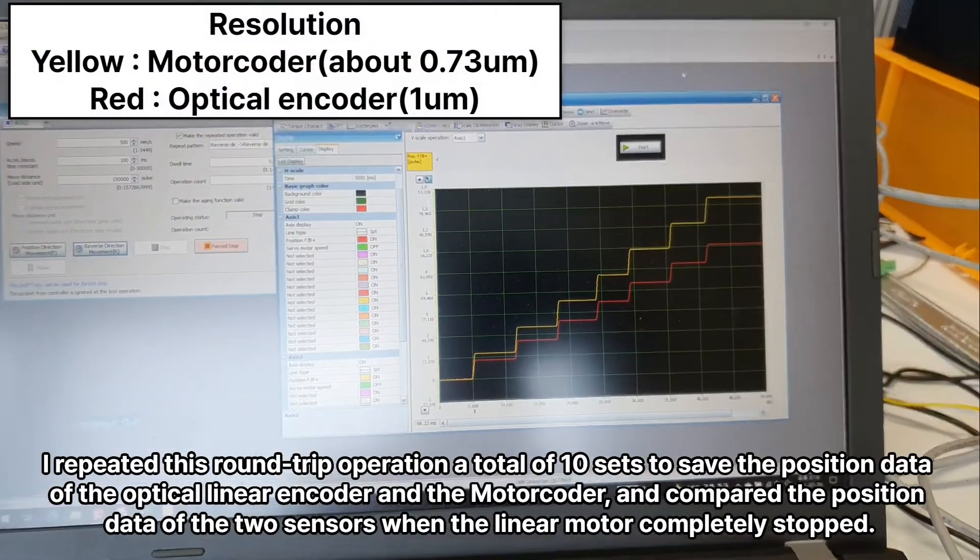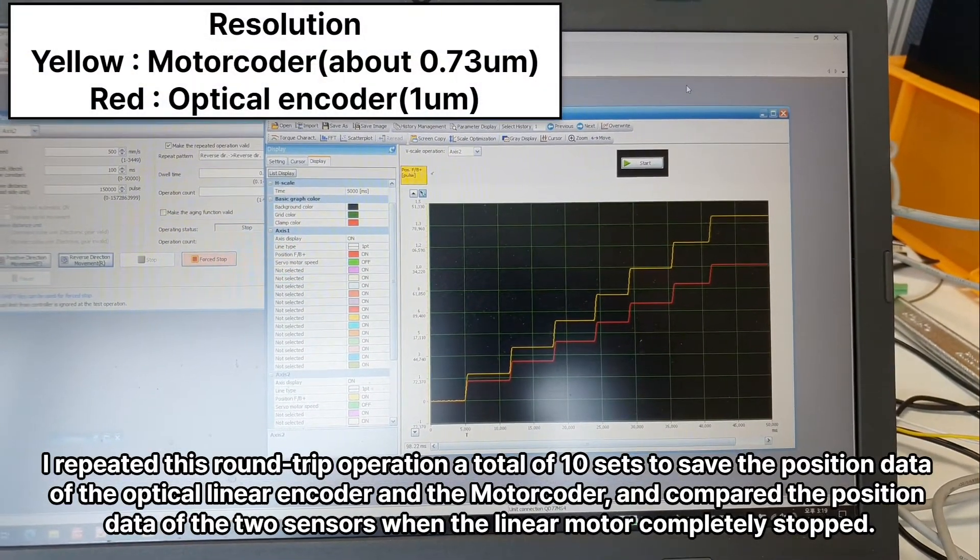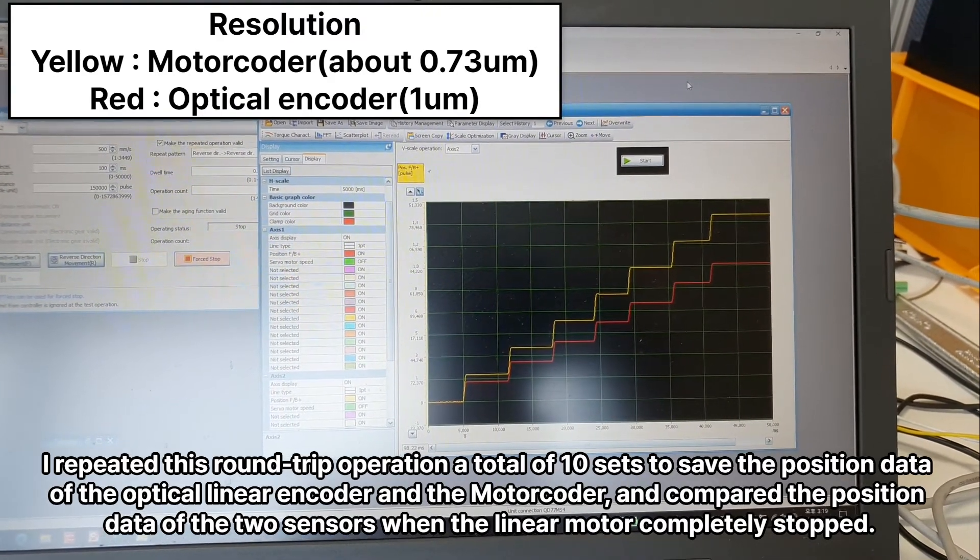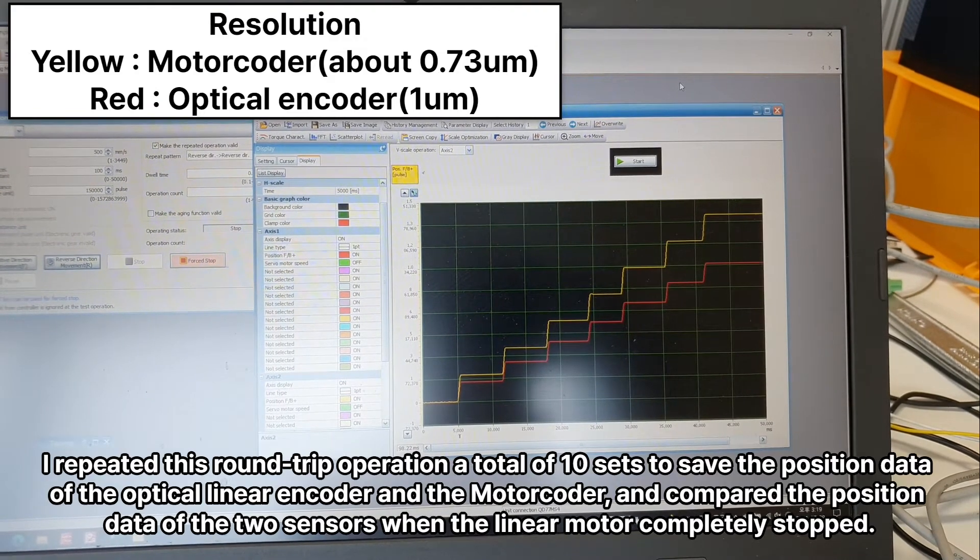I repeated this round trip operation a total of 10 sets to save the position data of the optical linear encoder and the motor coder, and compare the position data of the two sensors when the linear motor completely stopped.